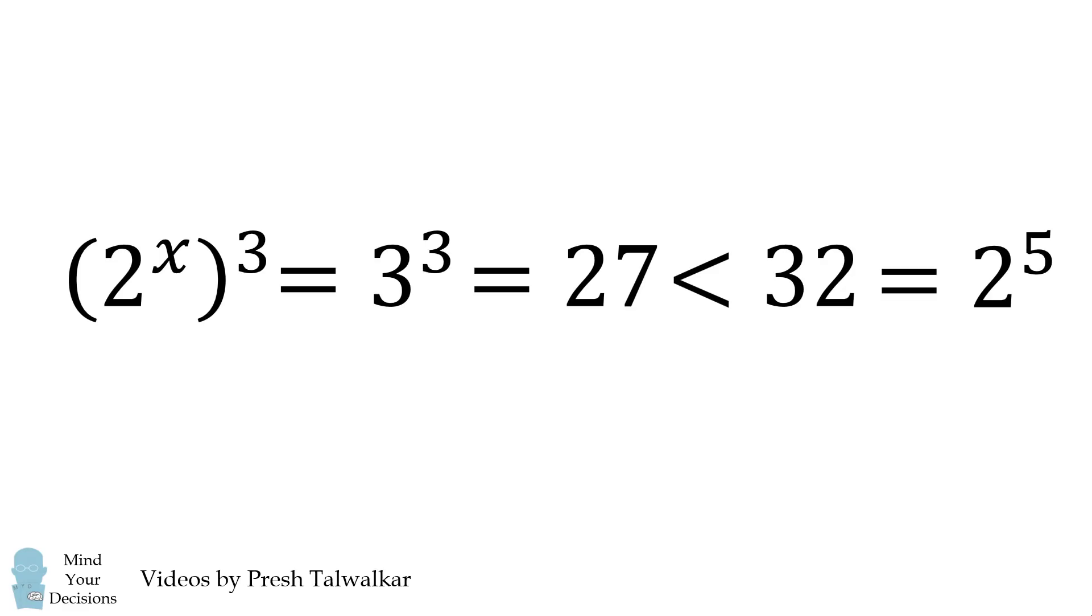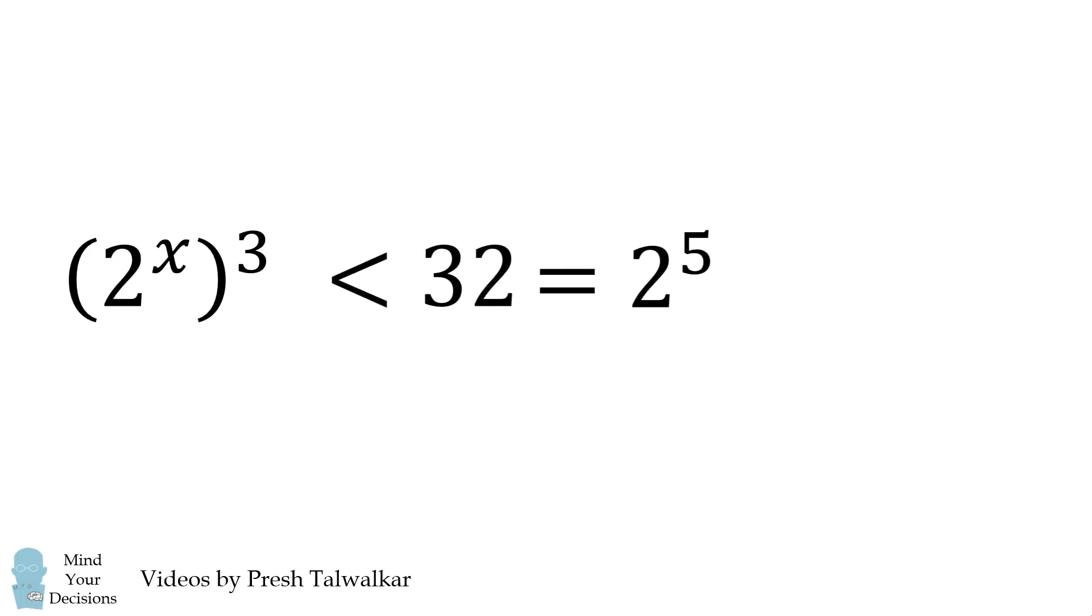This means that 2^x raised to the power of 3 will be less than 32, which equals 2^5. Consequently, 2^(3x) is less than 2^5, which then means 3x is less than 5.